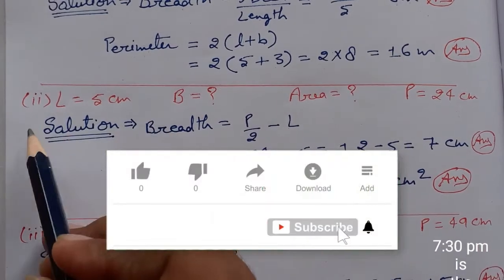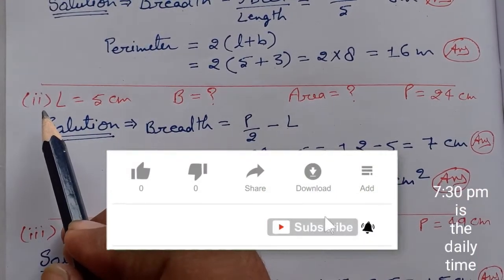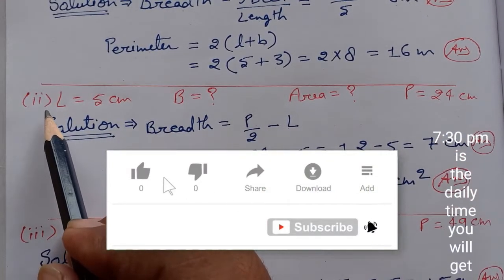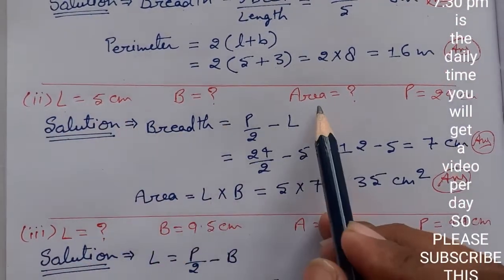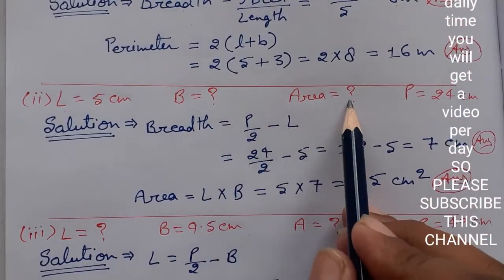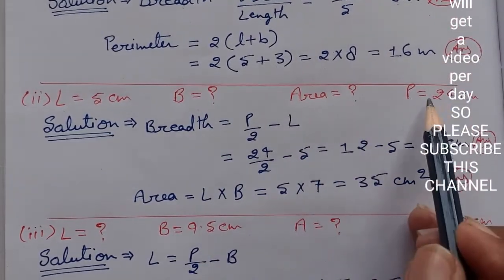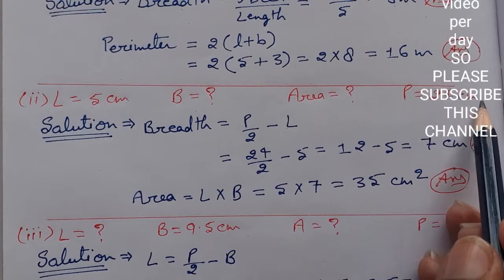Hi everyone, now we are going to do the second part of the first question of exercise 14a in which length is given as 5cm, breadth and area are not given, we will have to find them, and perimeter is given as 24cm.